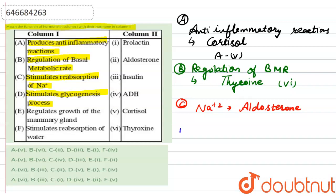The next function is to stimulate glycogenesis — the process in which formation of glycogen takes place. The hormone responsible for glycogenesis is insulin. So this one is related to the third option.